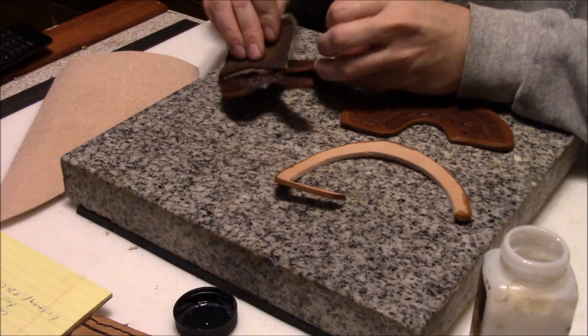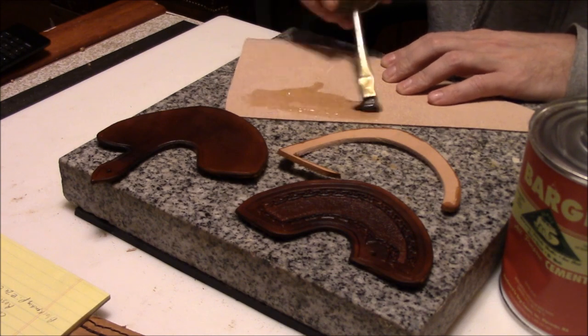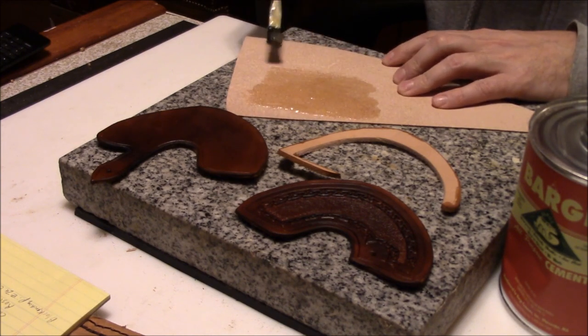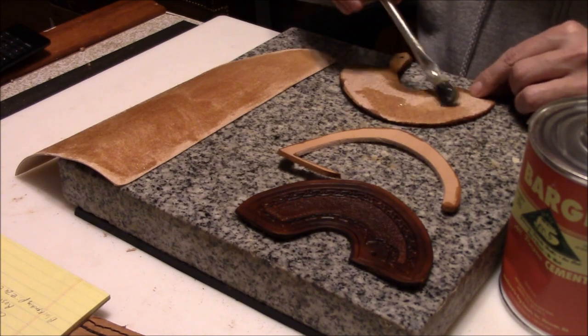And I put a coat of resling on for finish. And I decided I'm going to line this piece. Any knife sheath that I make for other people I line them, so I should probably do the same thing for myself.